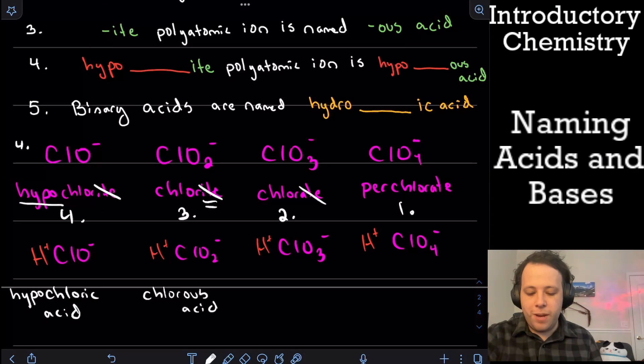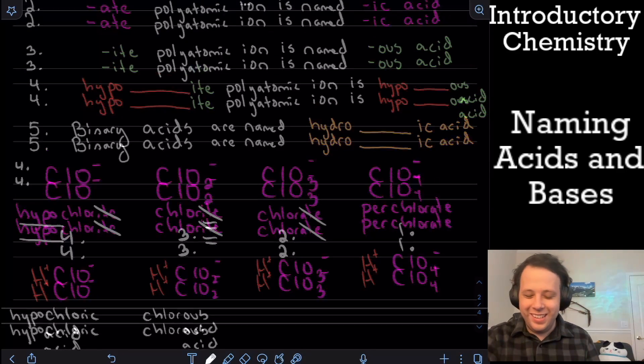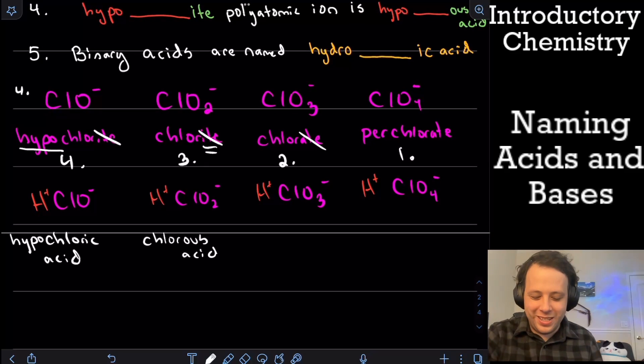Same thing for ate, right? We're dropping the ate ending, and then it's going from ate to ic. So remember, I hate this mnemonic. So we're going from, we're going to chloric acid.